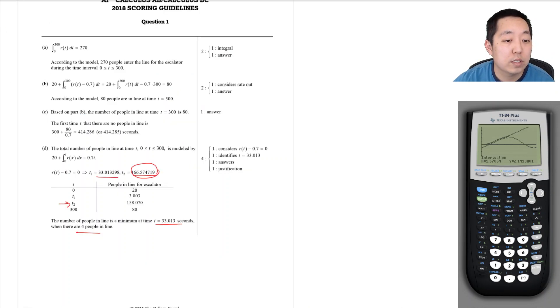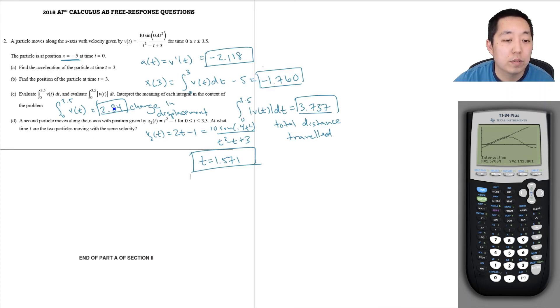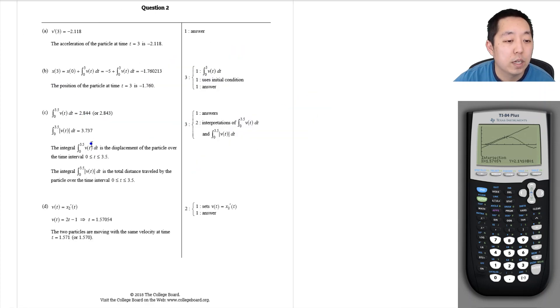Let's take a look at the answer key. Minus 2.108. Minus 1.760. 2.844. 3.737. I think those look alright. 3.7372. 2.84. Yep. This is the displacement of the particle. And this is the total distance traveled. And then 1.571.